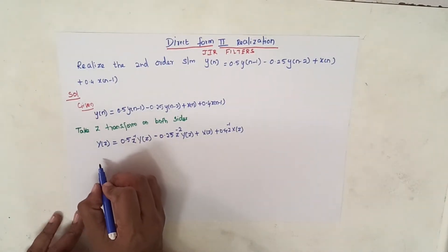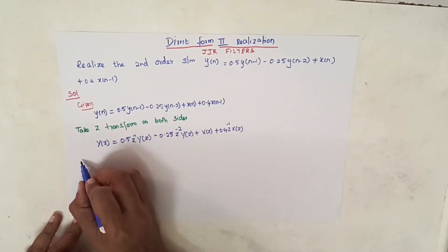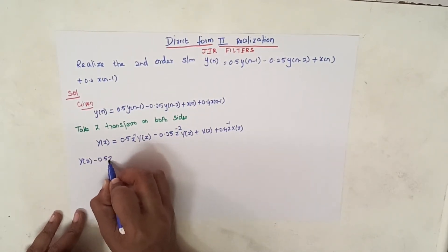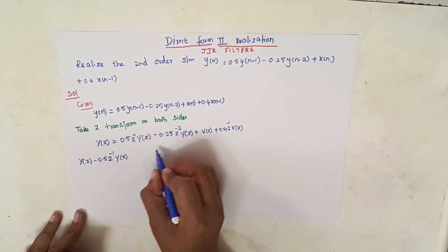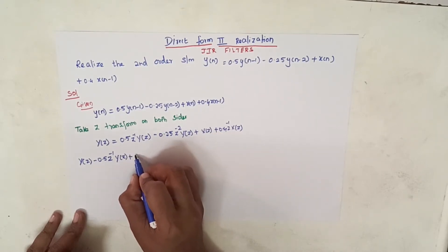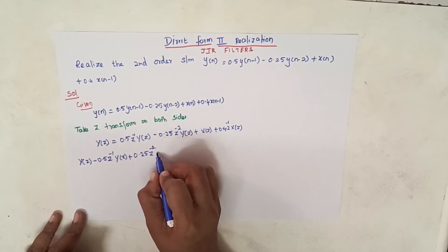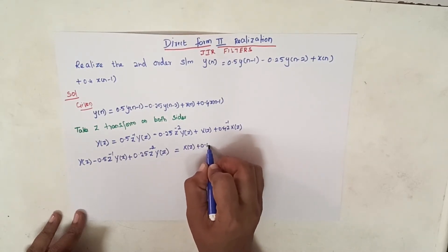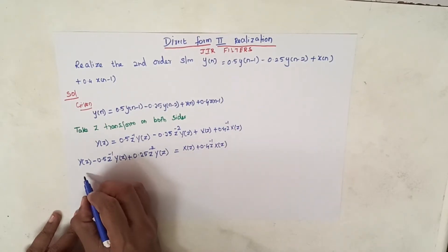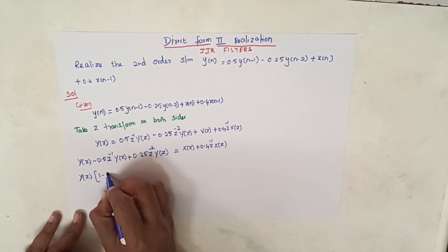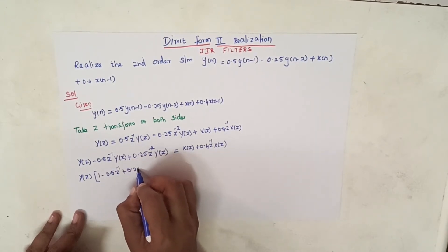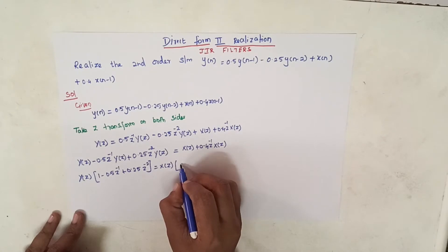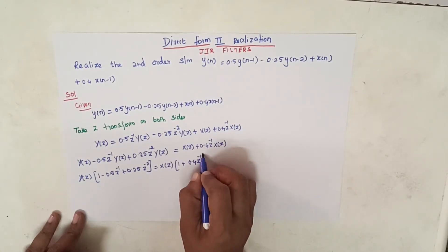In the next step, we have to group the Y(z) terms separately and X(z) terms separately. Bringing the Y(z) terms to the other side gives: Y(z)·[1 − 0.5·z⁻¹ + 0.25·z⁻²] = X(z)·[1 + 0.4·z⁻¹].